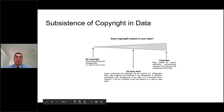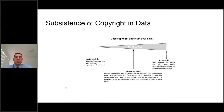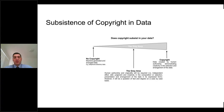For example, if you take that raw machine-generated dataset and a scientist comes along and thinks there's an error in one particular element of the data and puts in their own figures based on what they think it should be - because they have expertise in the area - or they change the way the data appears, its selection or arrangement, then that dataset which was once devoid of copyright protection now becomes protected by copyright.